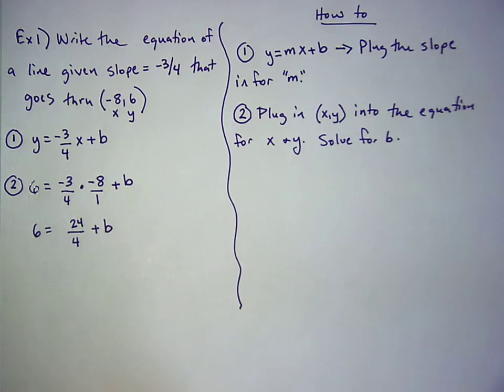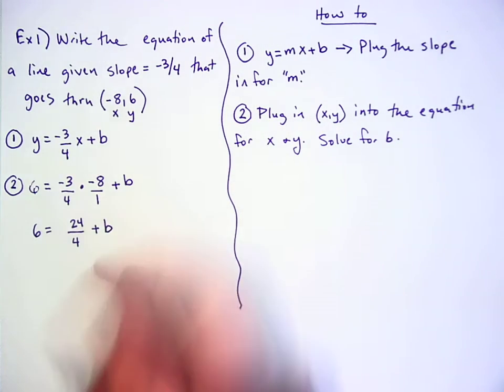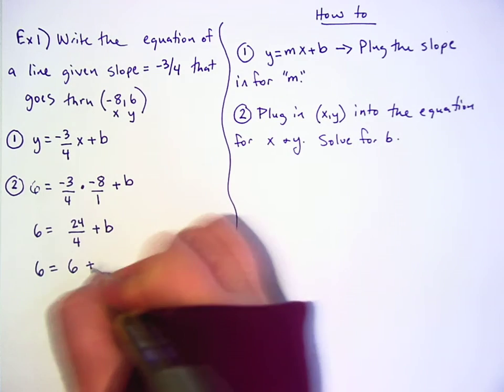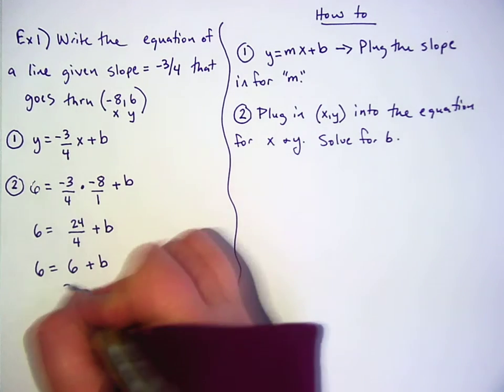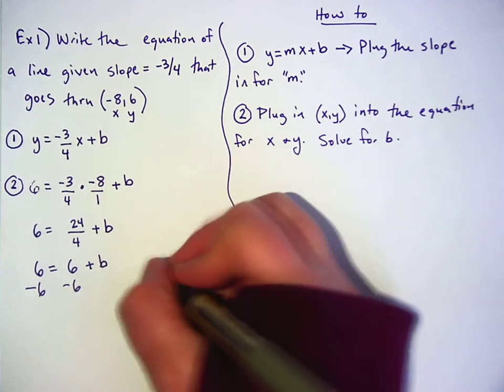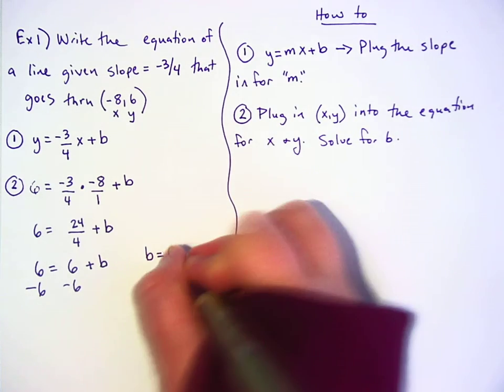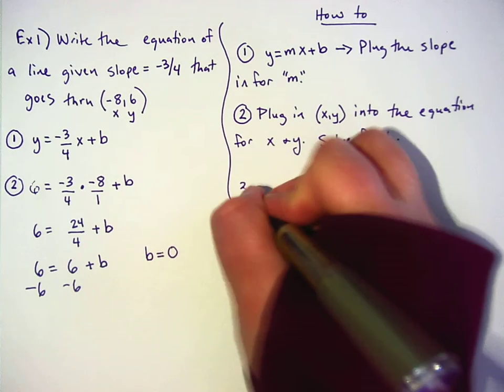What is 24 divided by four? Six. And then how do I get b by itself? Minus six. Minus six on both sides. So I get b equals zero. All right.